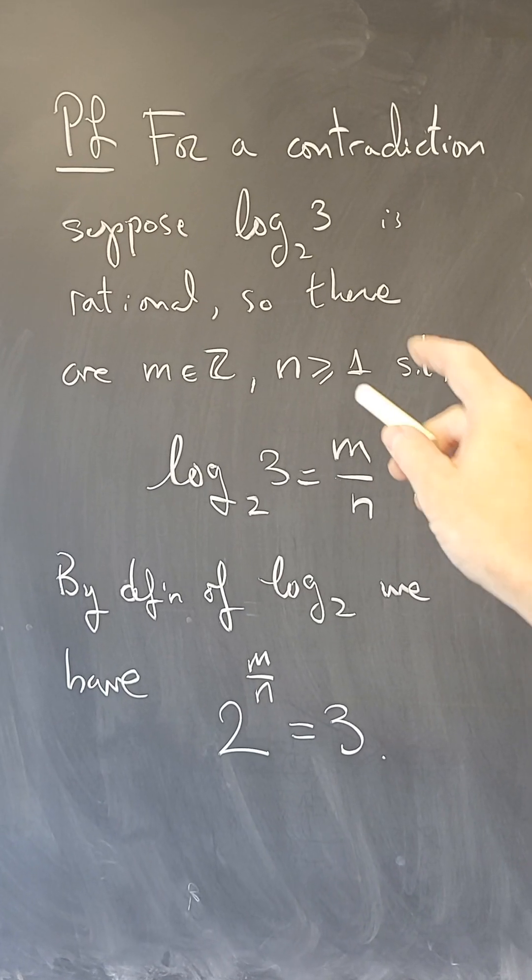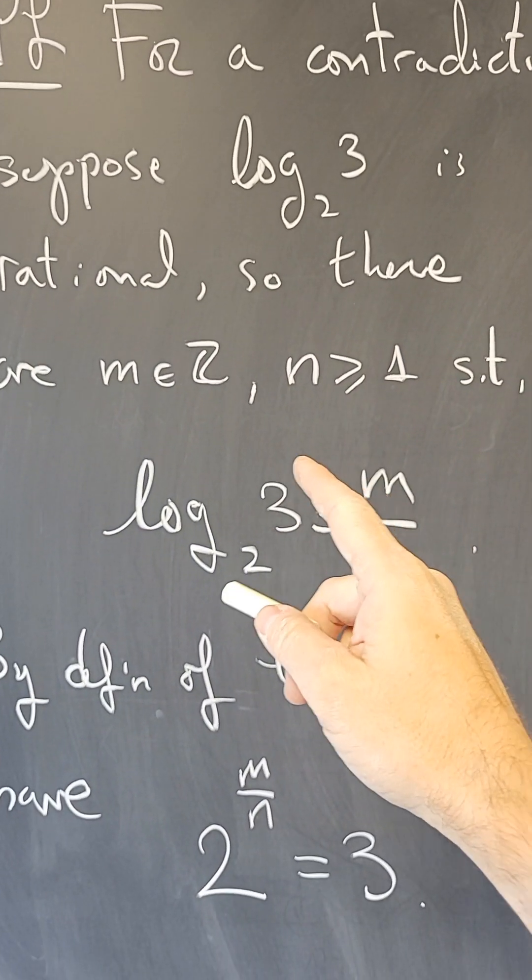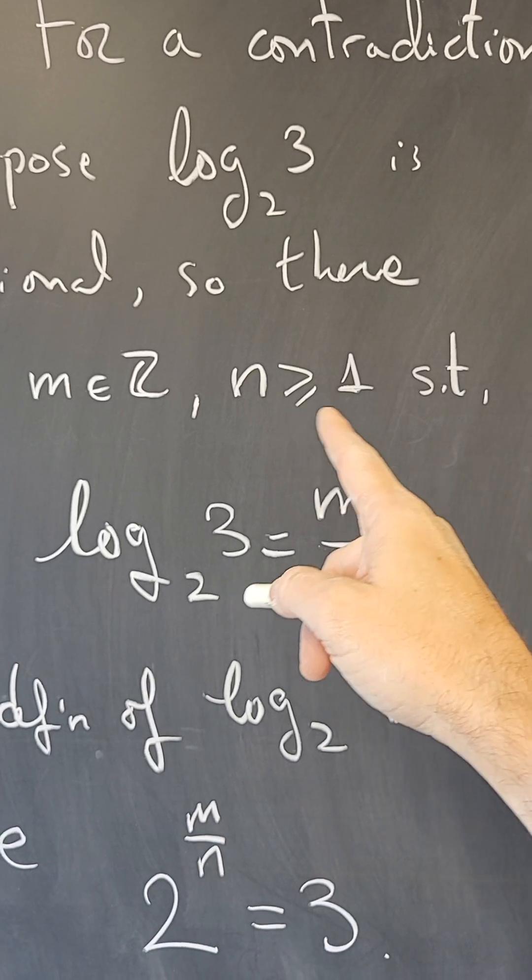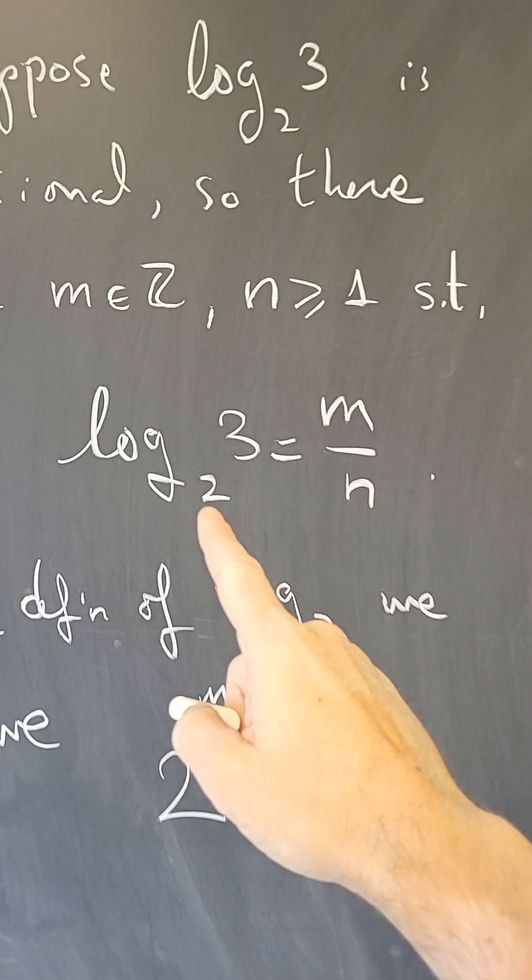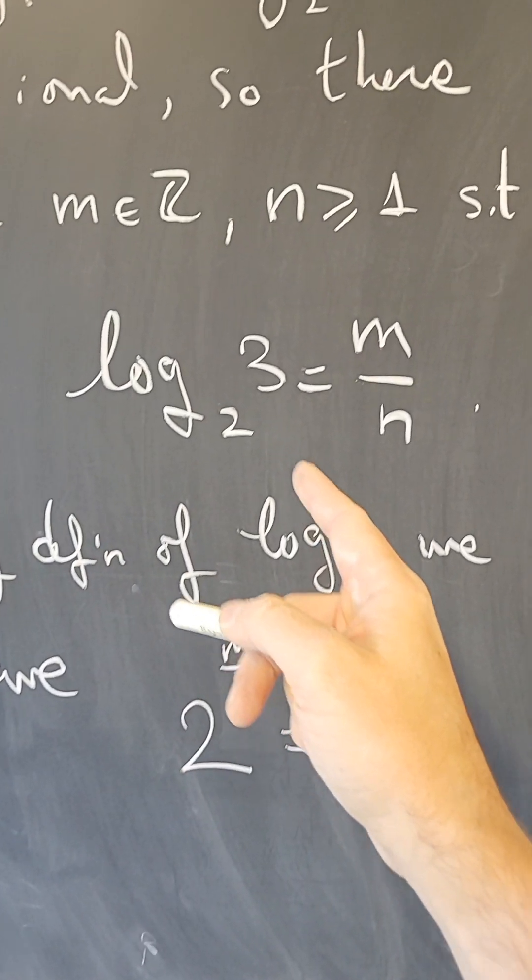For a contradiction, let's assume that log base 2 of 3 is a rational number. Then there are some integers m and n with n positive, such that log₂(3) equals m/n. By the definition of logarithm,